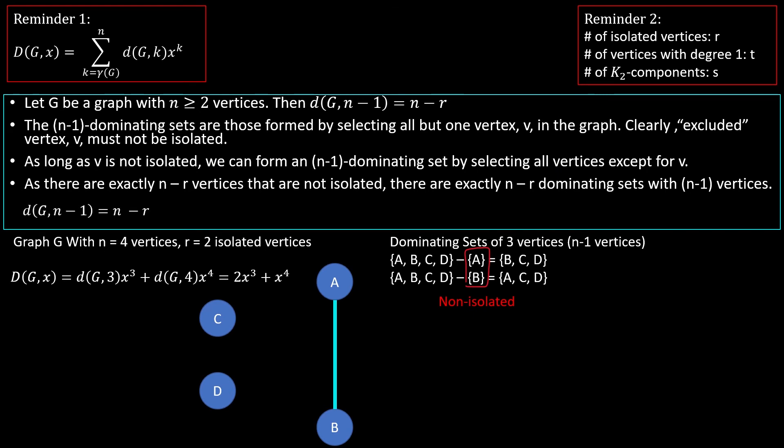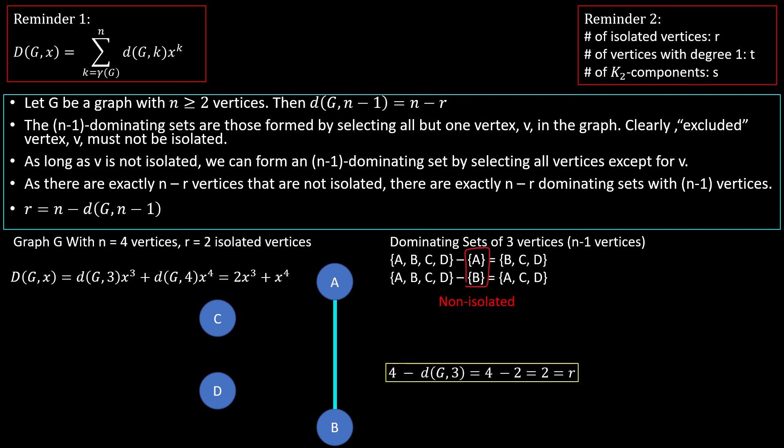This gives us exactly n minus r ways to select n minus one vertices from our graph and form a dominating set. So the coefficient of the n minus one degree term in the domination polynomial equals the number of vertices minus the number of isolated vertices. Rearranging, the number of isolated vertices r equals n minus the coefficient on the n minus one degree term. Since the degree of a domination polynomial is always the number of vertices in its graph, having the domination polynomial gives us everything we need to solve for r.